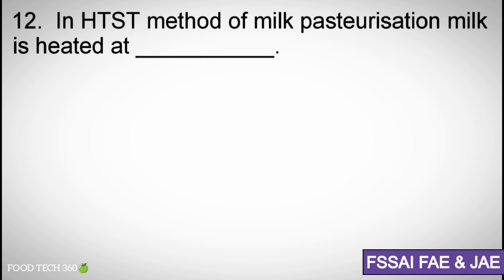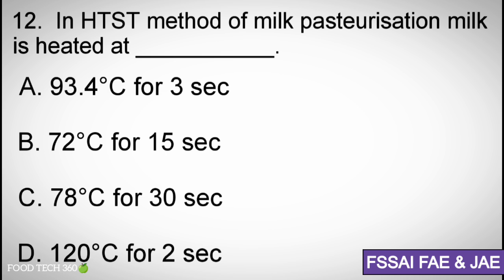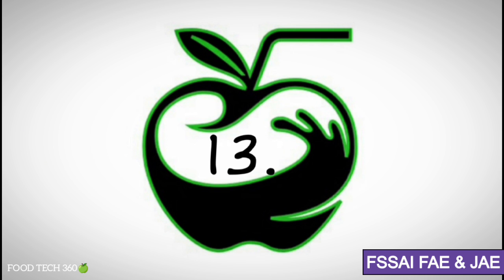Question number 12. In HTST method of milk pasteurization, milk is heated at what temperature? Options A. 93.4 degrees celsius for 3 seconds, B. 72 degrees celsius for 15 seconds, C. 78 degrees celsius for 30 seconds, D. 120 degrees celsius for 2 seconds. Correct answer B. 72 degrees celsius for 15 seconds.